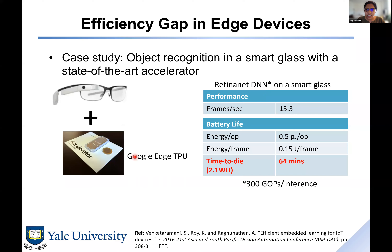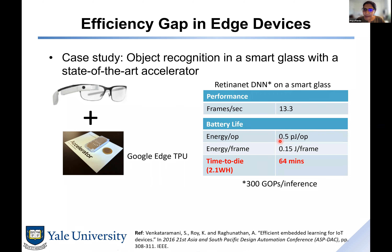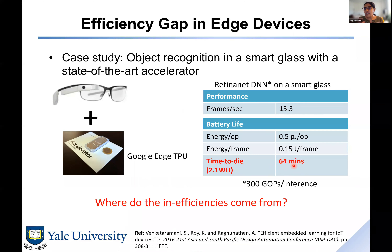They found the performance on this Edge TPU was around 13.3 frames per second. The energy per operation was around 0.5 picojoules, and based on the overall throughput they calculated the energy per frame. For a battery with 2.1 watt-hours of capacity, if you keep running this object recognition application continuously on the Edge TPU, the time to die for that battery is 64 minutes.